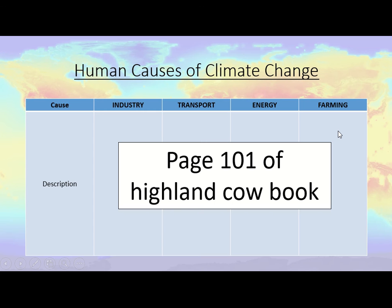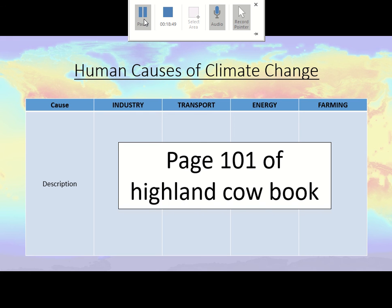The last part of this session requires you to access page 101 of the highland cow textbook. If it hasn't been uploaded to 365, you'll need to get a copy or email me for a scan. That page covers the four main exam board sections on how we cause climate change: industry, transport, energy, and farming — a good summary of the ways humans contribute to greenhouse gas emissions globally. Once you've completed that summary, lesson five is done. See you next time for lesson six!